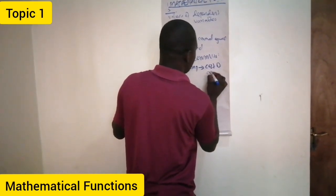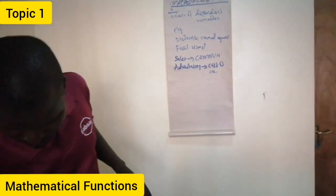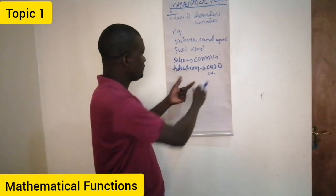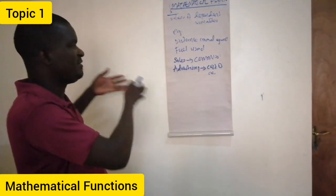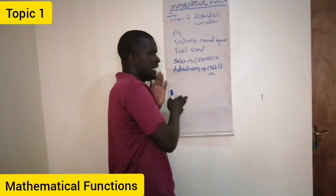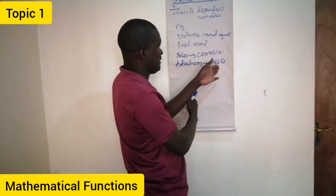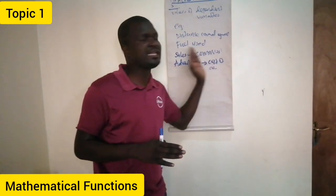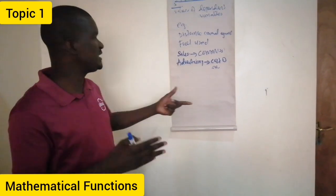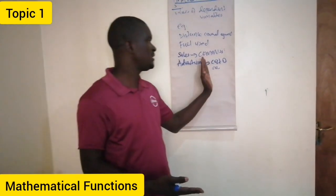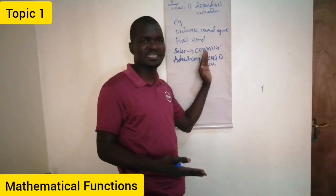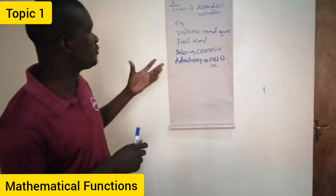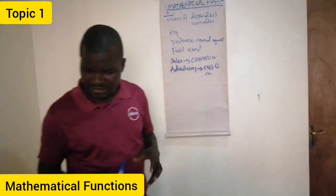Another example is advertising against cost of sales. The cost of sales will always increase if you do more advertising. If you don't advertise, the cost of sales remains the same. In this case, the dependent variable is cost of sales and the independent variable is advertising. So if you don't advertise, cost of sales will not be affected. That is what we are going to look at in this topic and in this lesson.